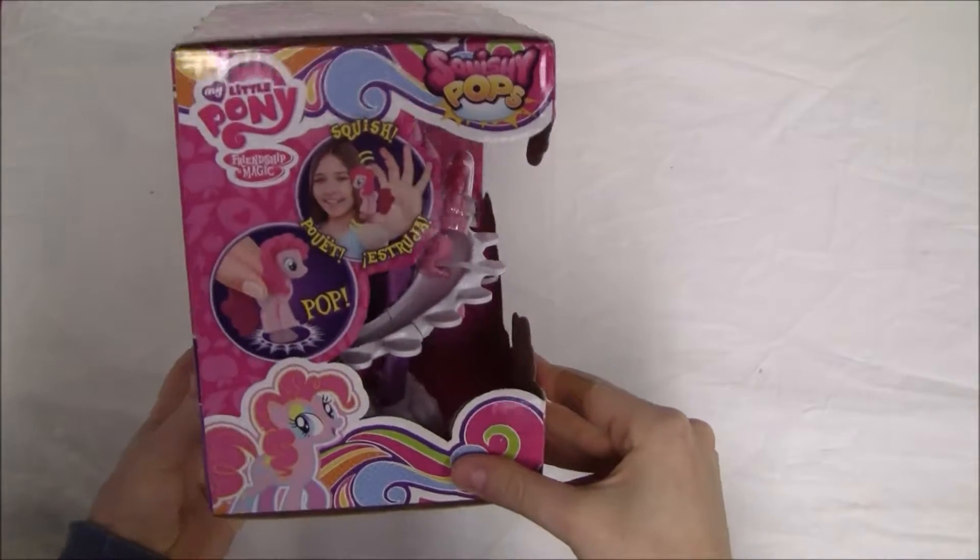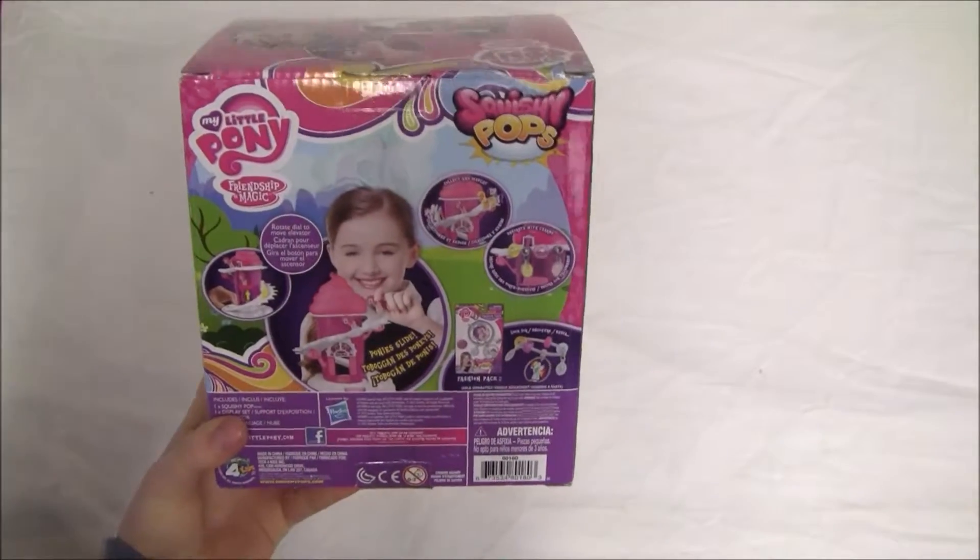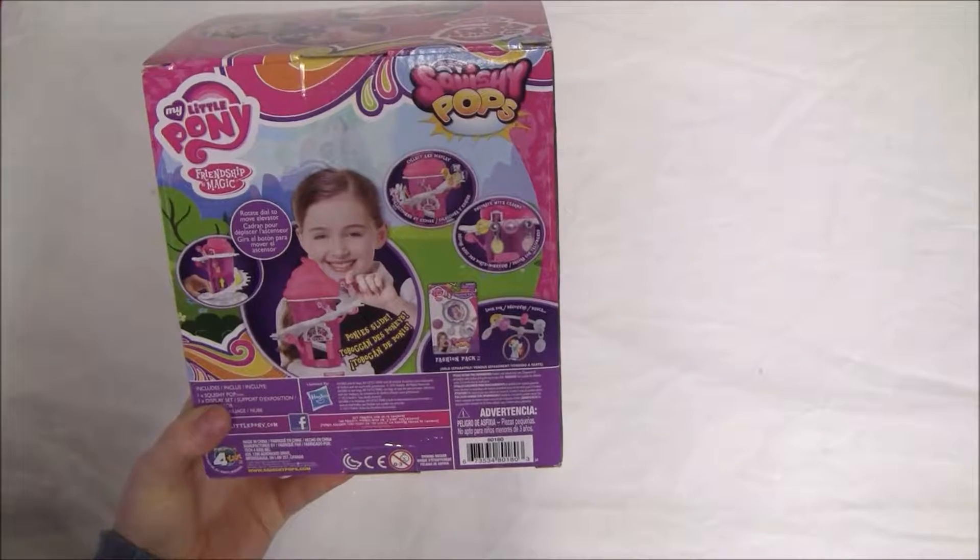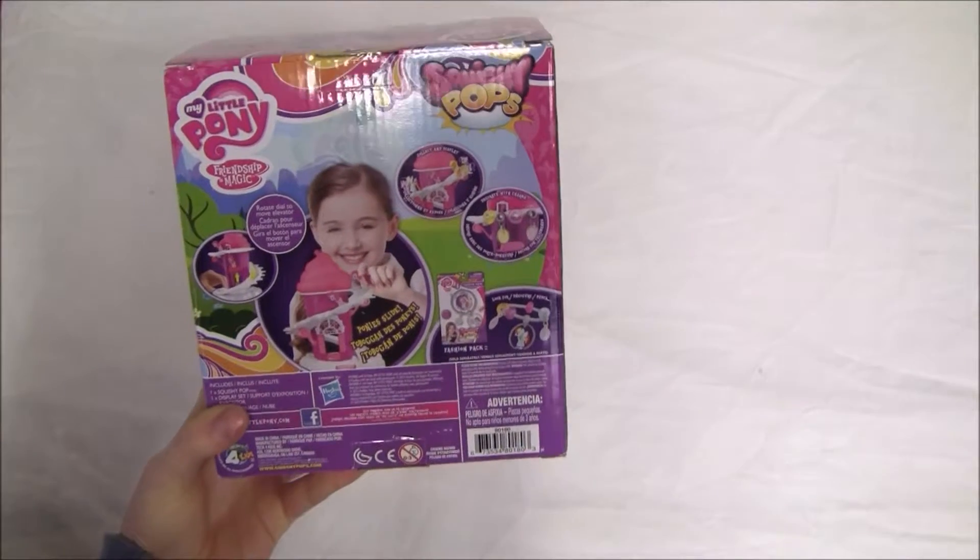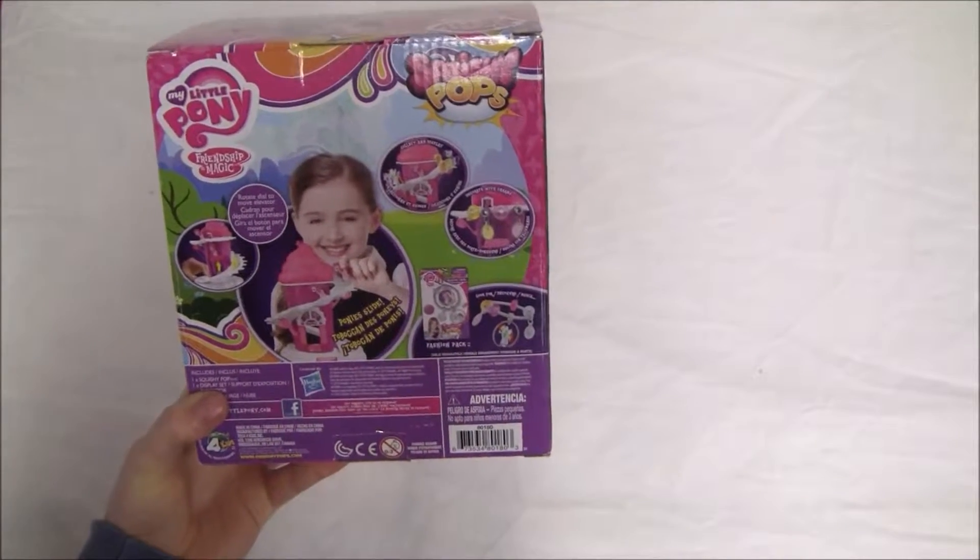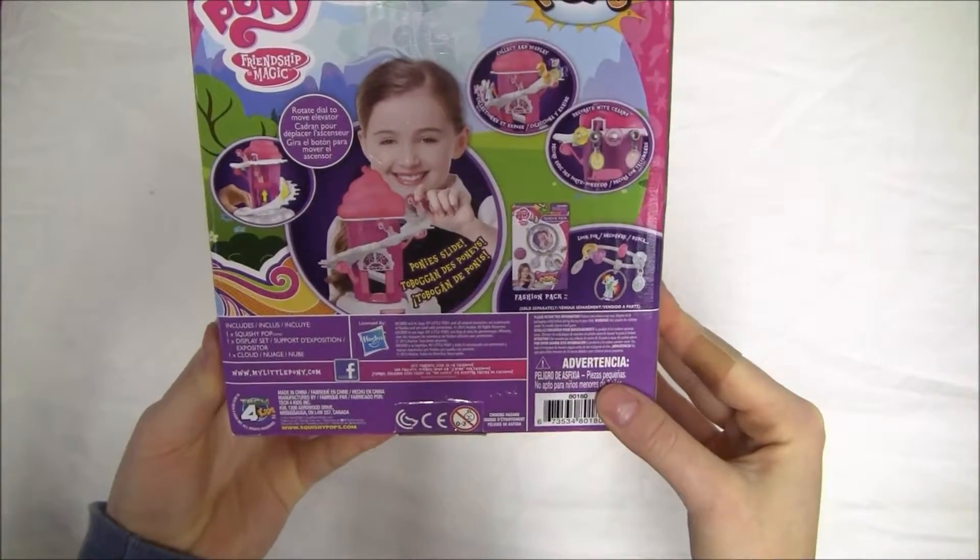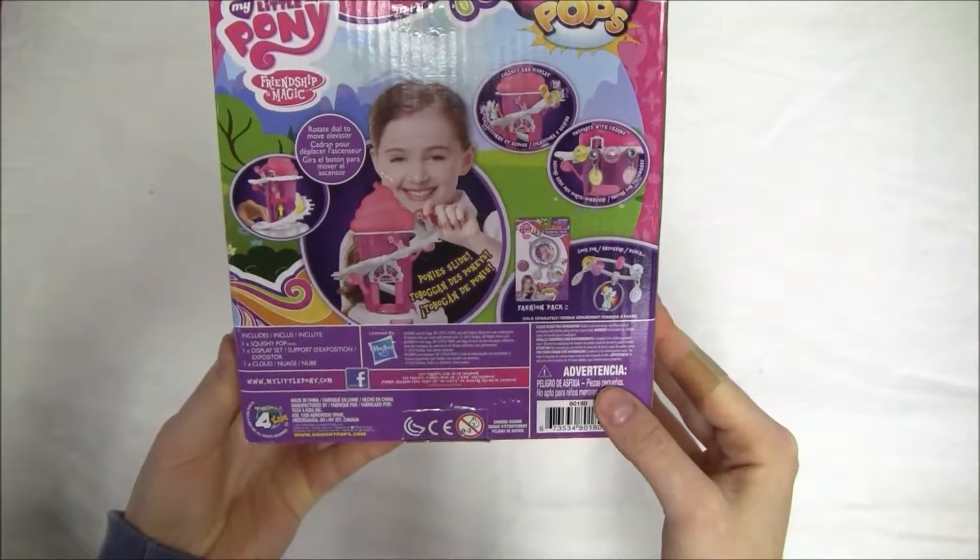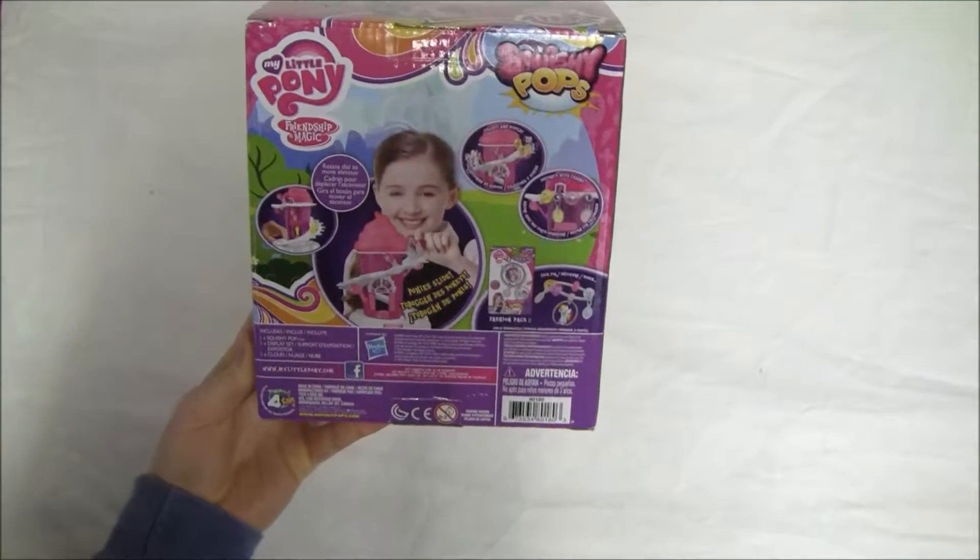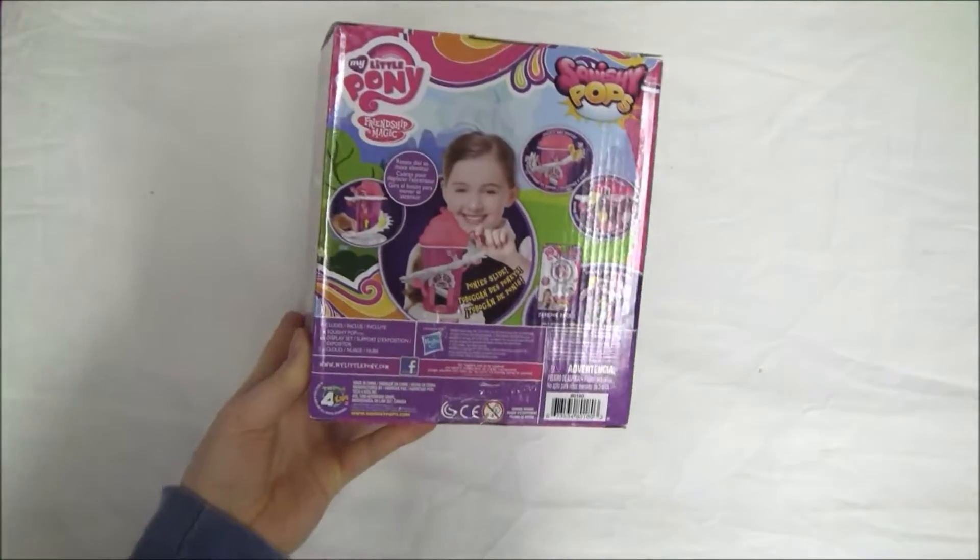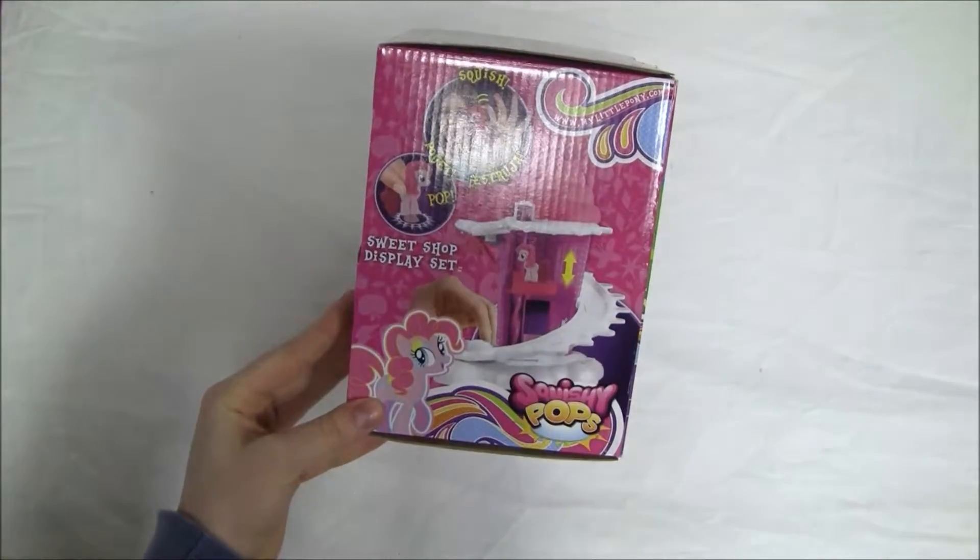On the back it has more information about what this set is all about. It says that we can rotate the dial to move the elevator and that we can collect and display different My Little Pony Squishy Pops and that we can decorate it with charms. So this set includes one Squishy Pop My Little Pony, one display set, and one cloud. This set is made by Hasbro.